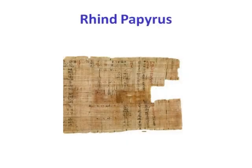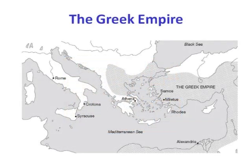Similar algorithmic approaches can be found in ancient Egyptian texts from around the same time. An important source is the Rhind Papyrus, dating from 1650 BC, believed copied from a text 150 years older, also held in the British Museum. Unlike the Egyptians and Mesopotamians, the Greeks were more concerned with proving things — particularly in arithmetic and geometry — than with algebraic pursuits like solving equations.